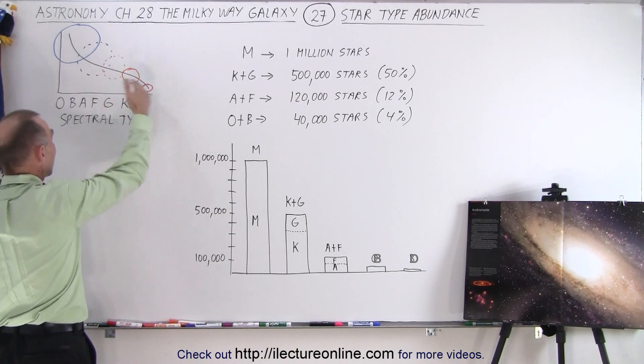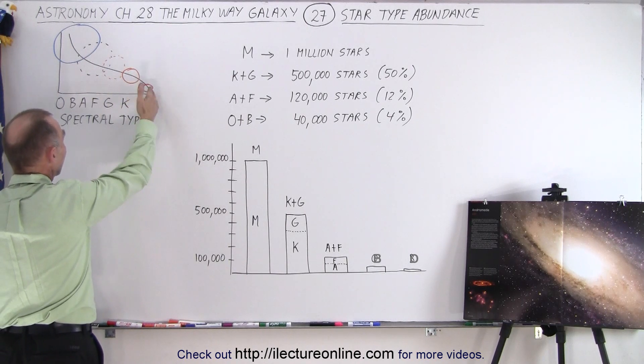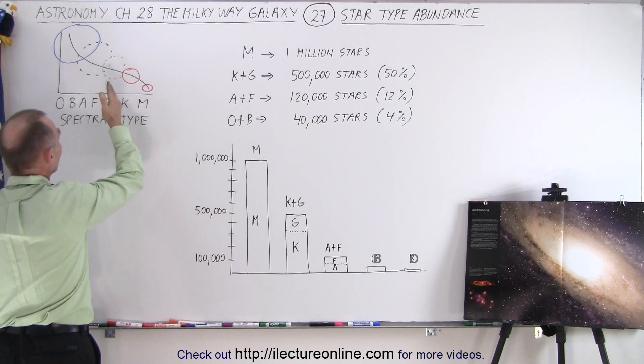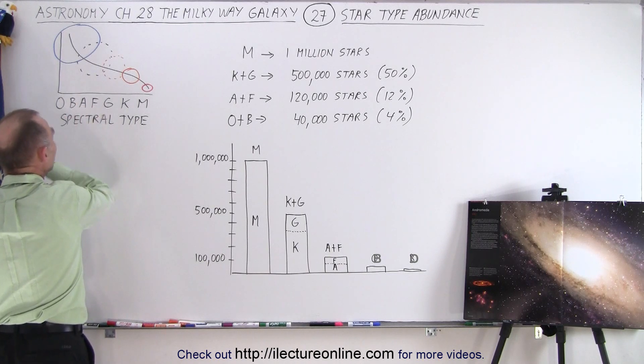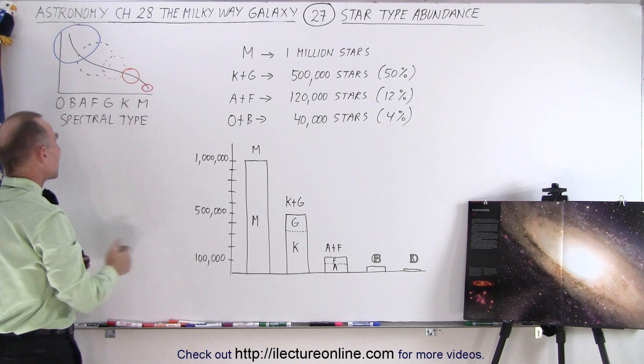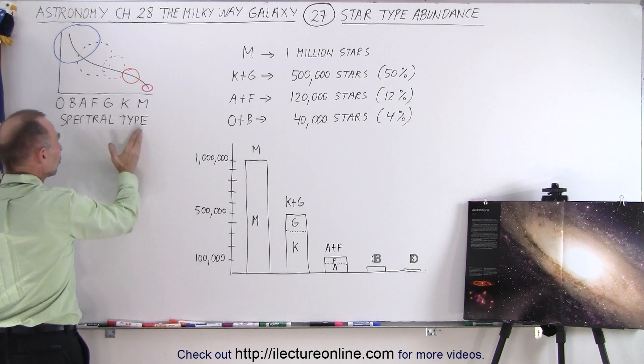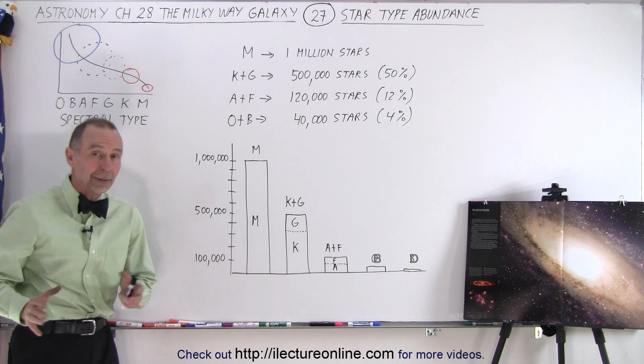If we look on the HR diagram, we notice that there are M-type stars, K-type stars, our sun is a G-type star, we have F, A, B, and O. So O, B, A, F, G, K, M, and we go from the largest to the smallest stars on the HR diagram.